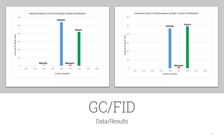Lastly, the GC-FID data. The U.S. sample is on the left, while the European sample is on the right. Again, both samples are mostly stearic and palmitic acids. Note that both samples also contain a small amount of margaric acid, and that the U.S. sample contains a small amount of myristic acid.